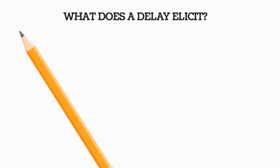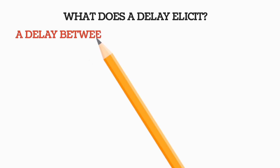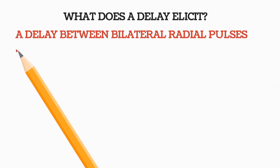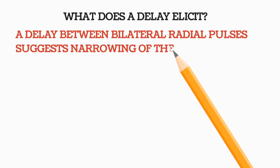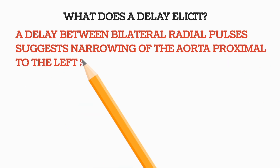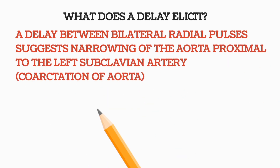What does a radio-radial delay indicate? A delay between the bilateral radial pulses suggests narrowing of the aorta proximal to the left subclavian artery. This is also called coarctation of the aorta.